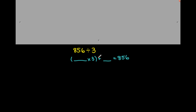So if that's what's being asked of us, this is what we mean when we say 856 divided by 3 — what number times 3, plus some remainder (which could be 0), equals 856. If we go into division thinking that way, we see the relationship between multiplication and division.